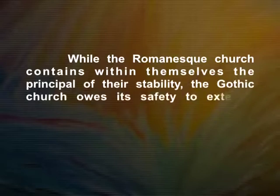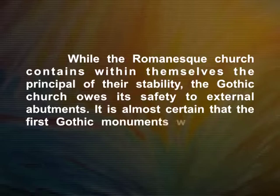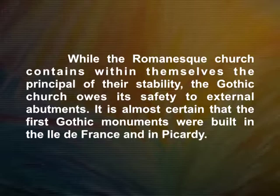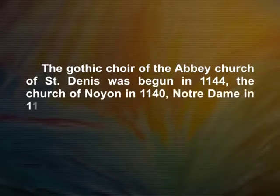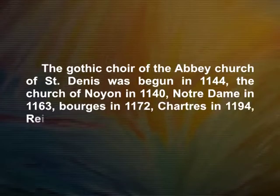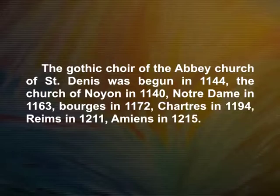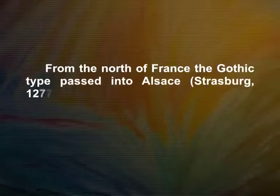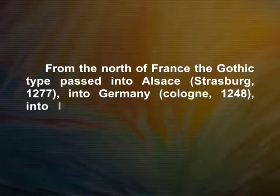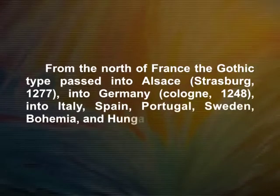While the Romanesque church contains within itself the principles of its stability, the Gothic church owes its safety to external abutments. It is almost certain that the first Gothic monuments were built in the Île-de-France and in Picardie. In Germany, Gothic art did not appear before 1209. The Gothic choir of the Abbey church of Saint Denis was begun in 1144, the church of Noyon in 1140, Notre Dame in 1163, Bourges in 1172, Chartres in 1194, Reims in 1211, Amiens in 1215. From the north of France, the Gothic type passed into Alsace — Strasbourg 1277 — into Germany — Cologne 1248 — into Italy, Spain, Portugal, Sweden, Bohemia, and Hungary.